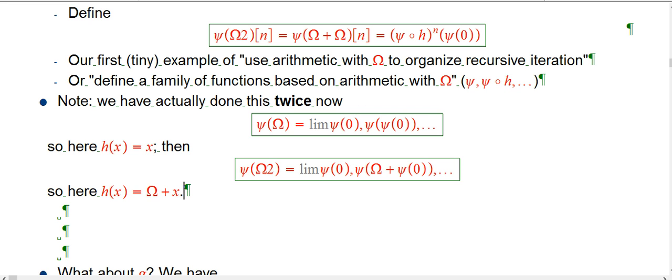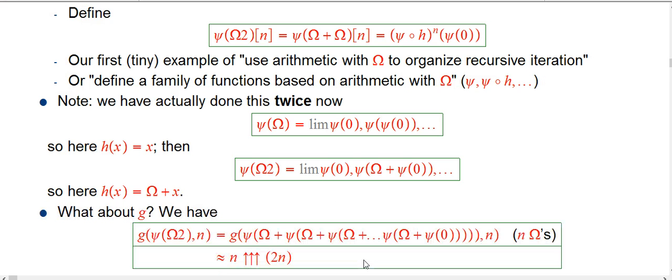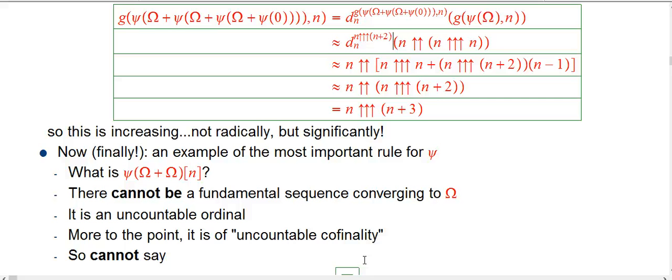So what about g of psi of omega 2? Well, that's not too hard to understand. We're iterating this process, and each time we're iterating it, we're starting with psi of 0, and we know that that has a g value of n double up n, and then we are doing psi of omega plus that. Well, we have a rule of psi of omega plus something.